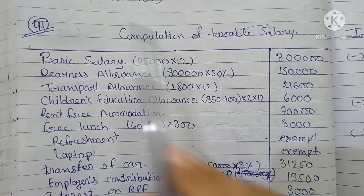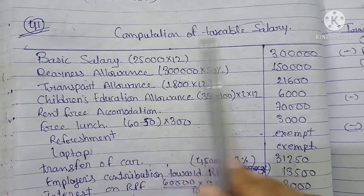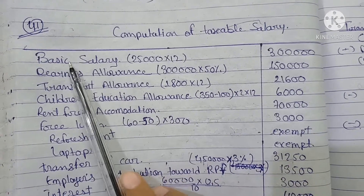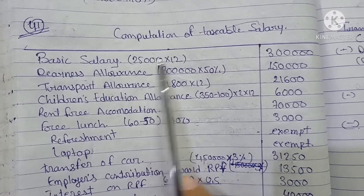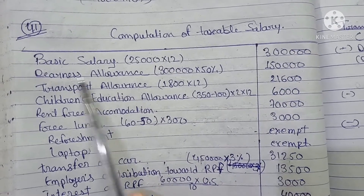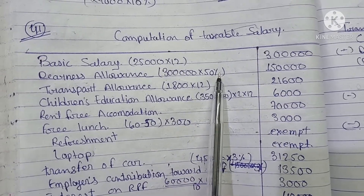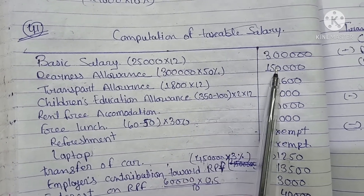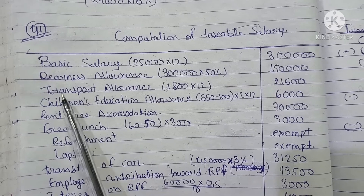Now we compute the taxable salary. Basic salary: $25,000 into 12 equals $3,00,000. Dearness Allowance is $1,50,000. Year-end allowance: $50,000.